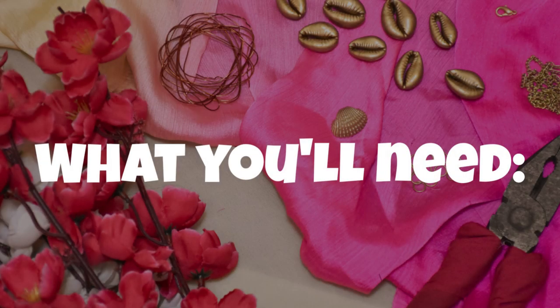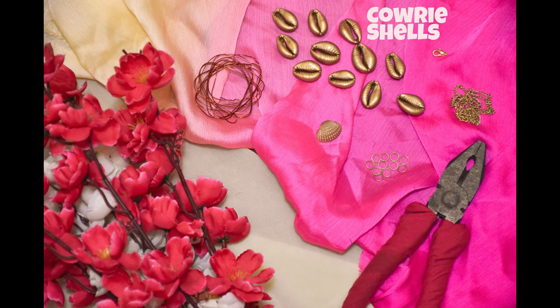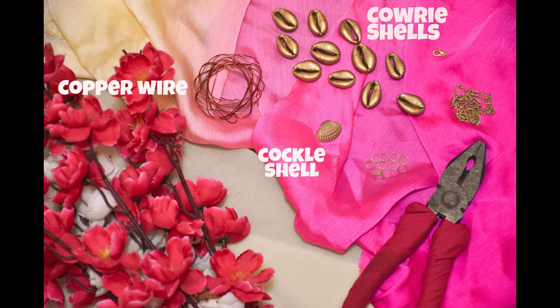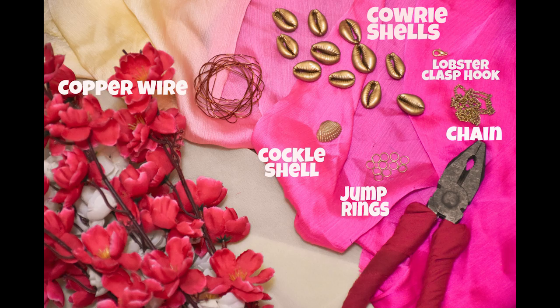We will start with what all you will need for the DIY. First, will be the cowrie shells. Second, is the cockle shell. I have spray painted these because I couldn't find anything gold in the market. Then, will be the copper wire, jump rings, lobster clasp hook, chain and a plier.